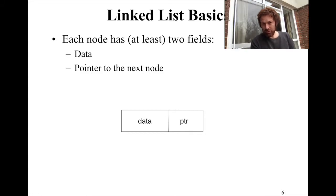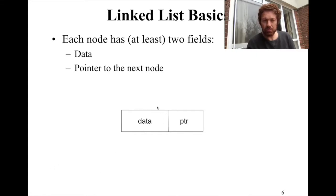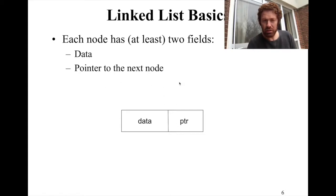Every node consists of at least two fields: data and pointer. The data part can be huge — even megabytes — so there are no bounds here really. But if you are storing numbers, the data part will be 32 bits, which is four bytes. You can also store an object of a class that has huge content. One thing we are sure of is the small size of this pointer — basically a 32-bit integer pointing to the next memory address.